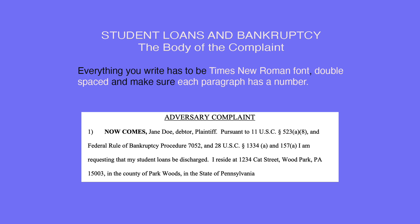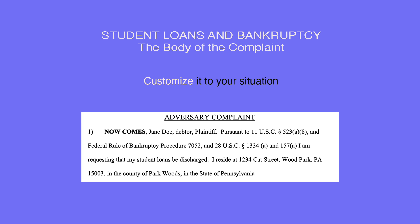Everything you write has to be Times New Roman font, double-spaced, and make sure each paragraph has a number. Customize it to your situation. You write: 'Now comes Jane Doe, debtor, plaintiff, pursuant to 11 USC Section 523(a)(8) and Federal Rule of Bankruptcy Procedure 7052 and 28 USC Section 1334(a) and 157(a). I am requesting that my student loans be discharged. I reside at 1234 Cat Street, Wood Park, Pennsylvania 15003, in the county of Parkwoods in the state of Pennsylvania.'